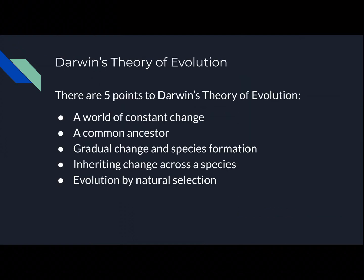Darwin's theory of evolution. There are five points to his theory: a constant world of change, a common ancestor, gradual change and species formation, inheriting change across the species, and evolution by natural selection.